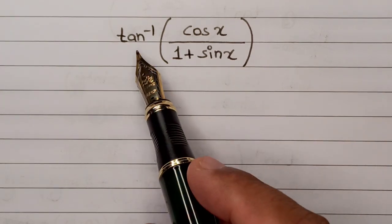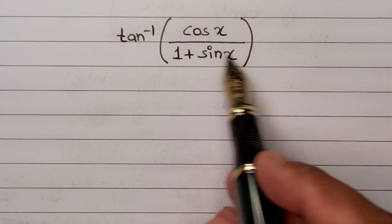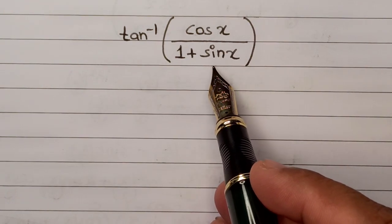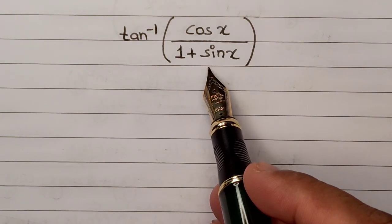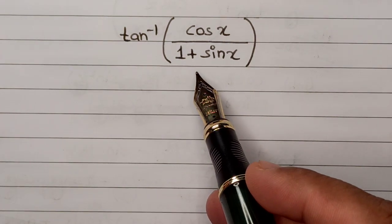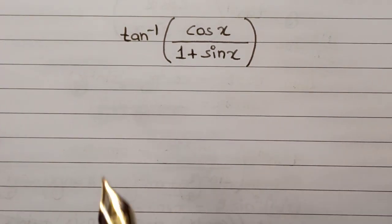This particular problem here is tan inverse of cos x divided by 1 plus sine x, and we have to reduce it into the simplest possible form so that we can come to the conclusion.